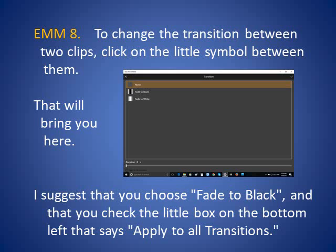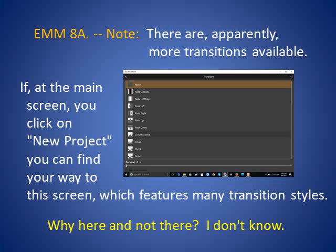Step 8: To change the transition between two clips, click on the little symbol between them — that will bring you to this screen. I suggest that you choose Fade to Black and check the little box on the bottom left that says Apply to All Transitions. Now, a note on this: there are apparently more transitions available. If at the main screen you click on New Project, you can find your way to a screen which features many transition styles. Why here and not there, I don't know.